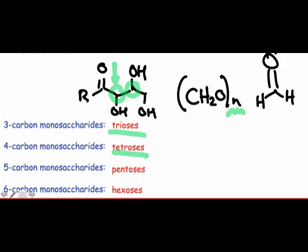Each internal carbon atom — that is, every carbon atom but the first and last — is a stereocenter. In fact, much of the structural diversity of the sugars is derived from their unique configurations at these stereocenters.